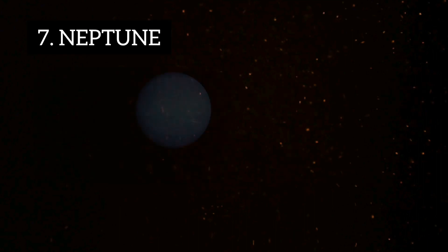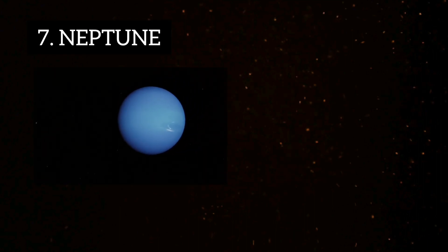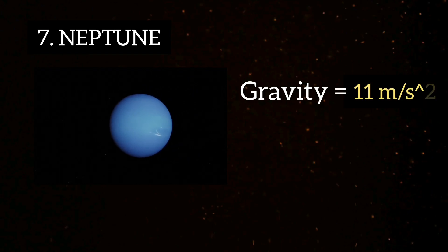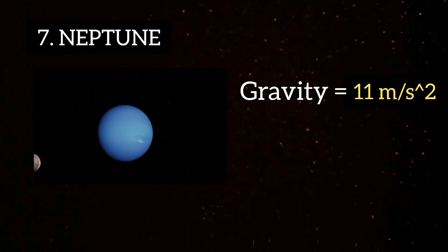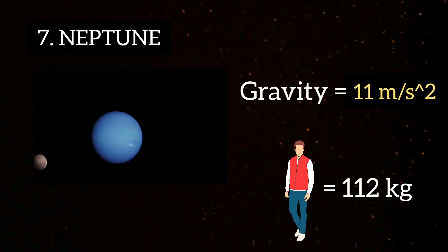Neptune, the farthest planet of our solar system, has a gravity of around 11 meters per second square, which is 1.12 times the Earth. So, the person's weight will be around 112 kg on Neptune.